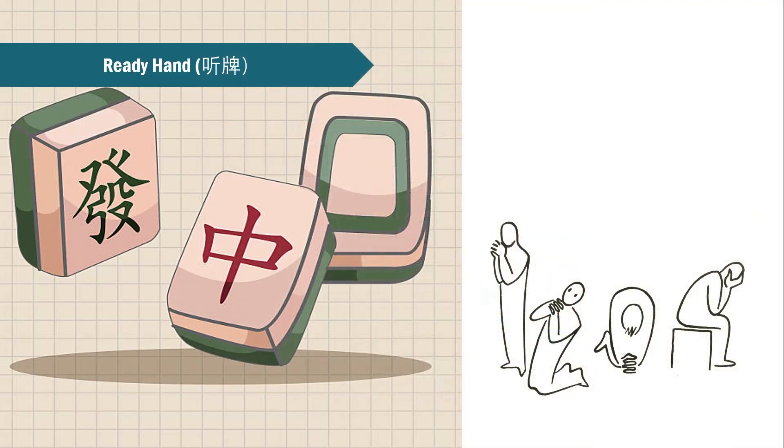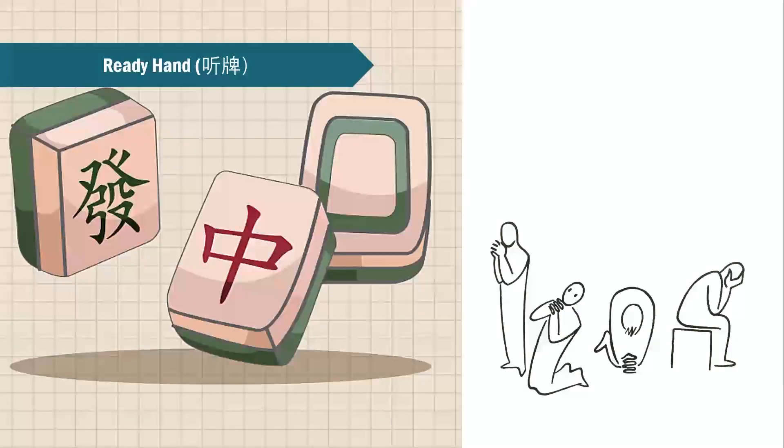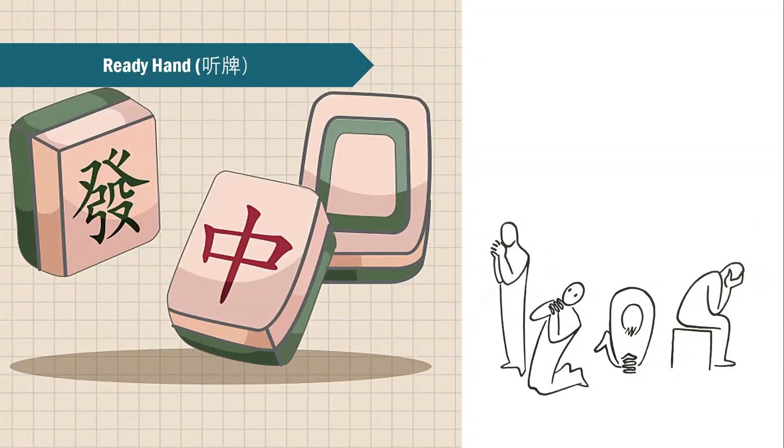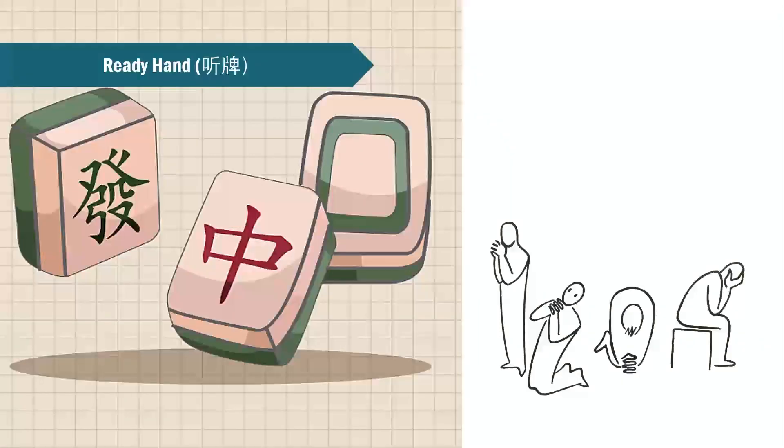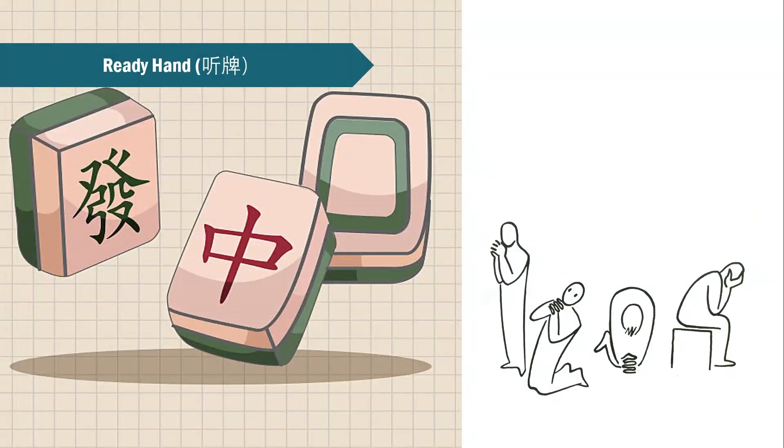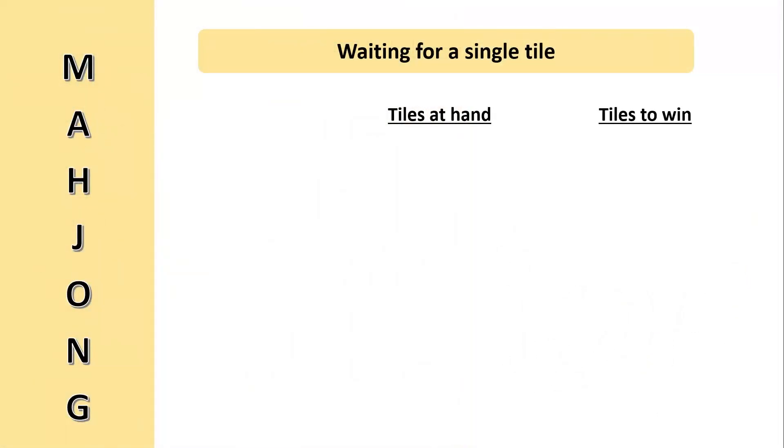One of the moments that gets us most excited or anxious in Mahjong will be when we are waiting for the final tau to win the game, also known as ting pai. We can't always choose what kind of hand to end up with at this late stage. However, we can always try to strategize and plan ahead in advance to maximize the chance of being in the best ting pai position to win the game. Now, let's move on and talk about what are the worst and best kind of ready hand to have.